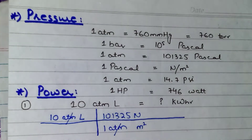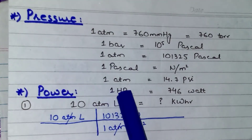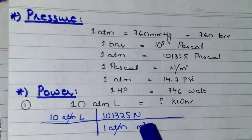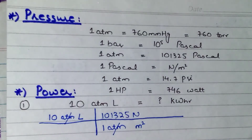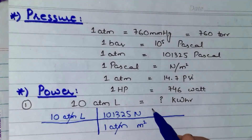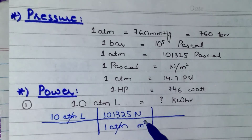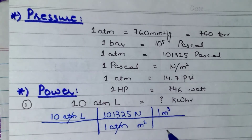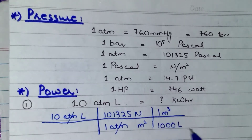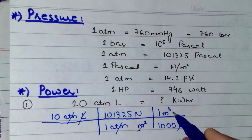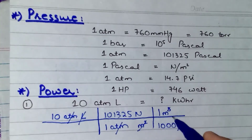Next, I know that this litre is the unit of volume. I have to cancel this litre and also this meter square. So I remember that while doing volume conversions, we read a relationship that was 1 meter cube equals to 1000 litre. So to cancel out the meter square, I write 1 meter cube equals to 1000 litre. It will cancel out this litre, and this meter square will be cancelled out by this meter cube — only 1 meter will remain.